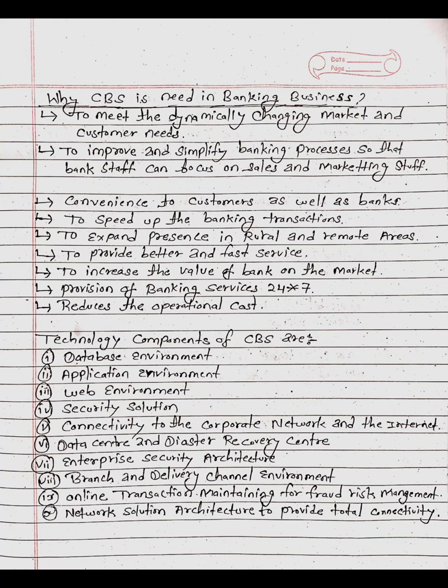Technology components of CBS are: database environment, application environment, web environment, security solution, connectivity to the corporate network and the internet, data center and disaster recovery center, enterprise security architecture, brands and delivery channel environment, online transactions, maintaining fraud risk management, and network solution architecture to provide total connectivity.